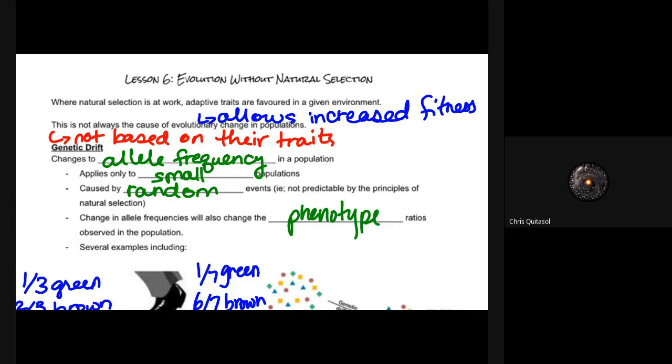Genetic drift allows for allele frequency changes in a population, and it only applies to small populations. It's very tiny populations, so it's hard to scale up in terms of natural selection. It's caused by random events that are not predictable by any principle of natural selection, and those changes in allele frequencies will also change the phenotype ratios observed in a population.